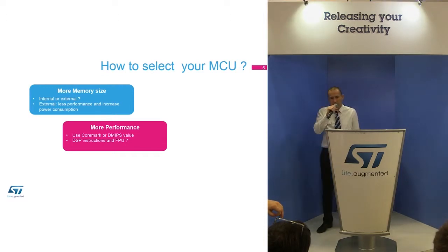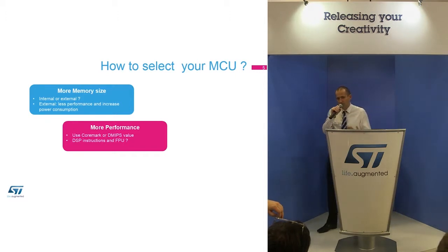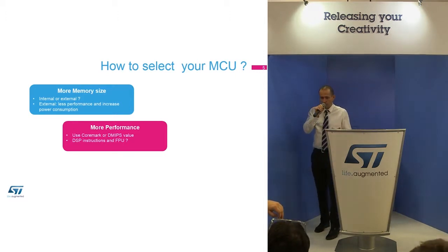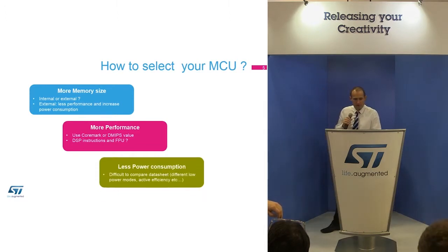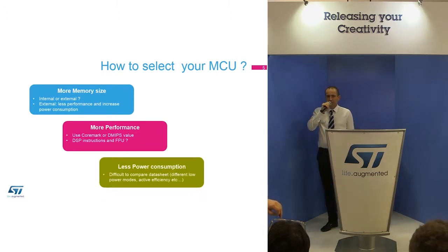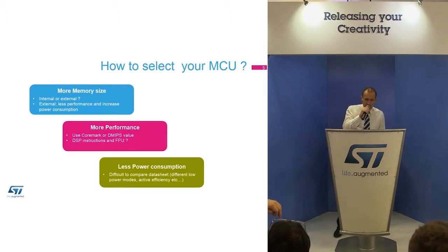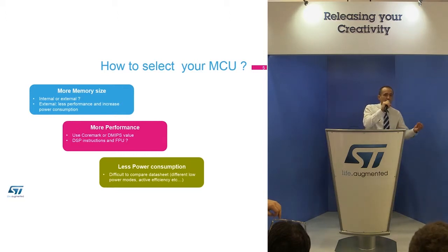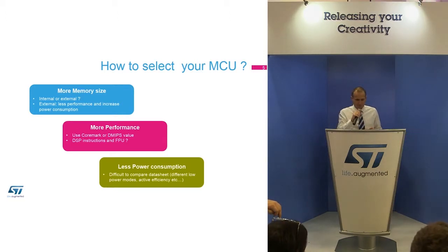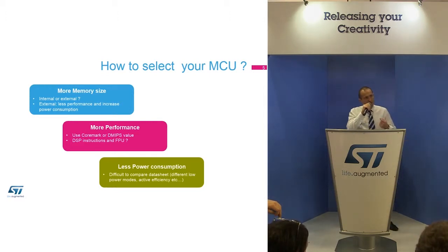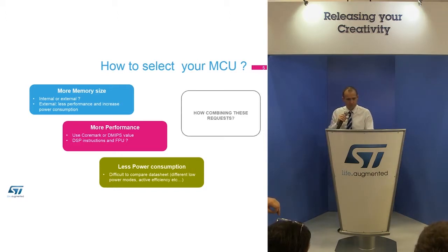Regarding performance, to select the MCU, you can use the CoreMark benchmark. You also need to take care about whether you need DSP instructions or floating point units. And the last thing is regarding power consumption, but it's very difficult to compare a product to another based on the datasheet, because the low power modes are different from one product to another. And then finally, how to combine these requests.